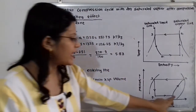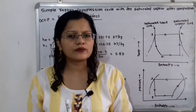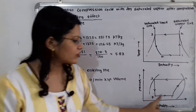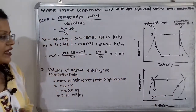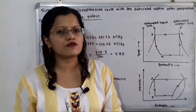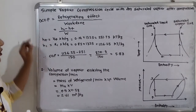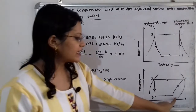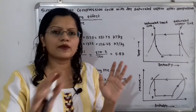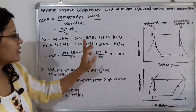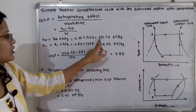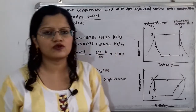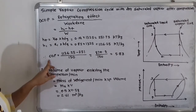To calculate enthalpy at points 1 and 4, we use the dryness fraction — the mixture of liquid and vapor — given at both points. So h4 = x4 × hfg = 0.19 × 1325 = 251.75 kilojoule per kilogram, and h1 = x1 × hfg = 0.85 × 1325 = 1126.25 kilojoule per kilogram.